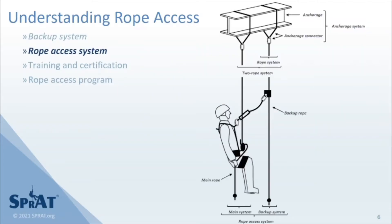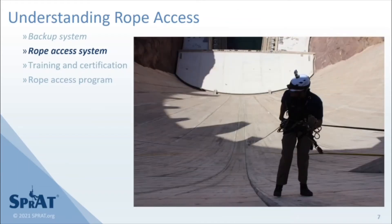The main system in rope access complements the backup system by providing the safety of a hands-free positioning system at all times. The rope systems used to make both the main and backup systems are interchangeable, further increasing the versatility of a rope access system. Compared to other forms of fall protection, which may only incorporate a positioning system when a worker arrives at their work location, the main system in a complete rope access system extends that functionality during the access and egress portions of work, making accessible work locations that may be unavailable via other means.